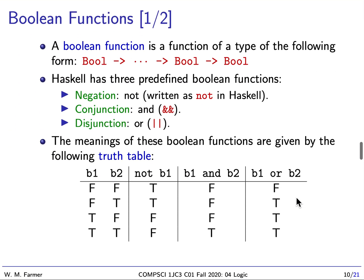We have something called a Boolean function. A Boolean function is just a function whose inputs and outputs are all of type Bool. All its inputs and its output are of type Bool. So in Haskell, it's going to have a type of this form: Bool -> Bool -> Bool -> ... -> Bool, any number of times.